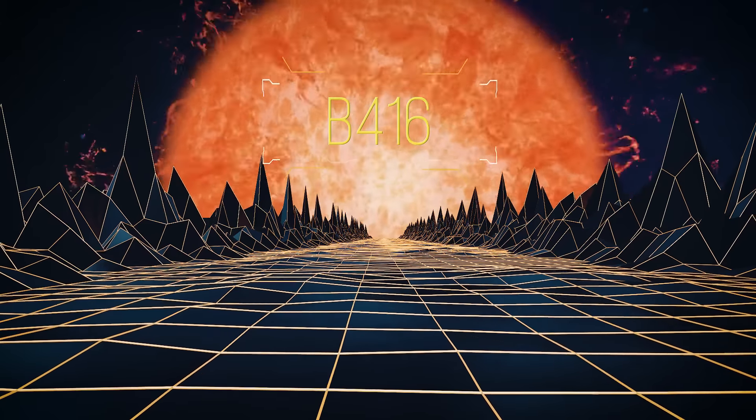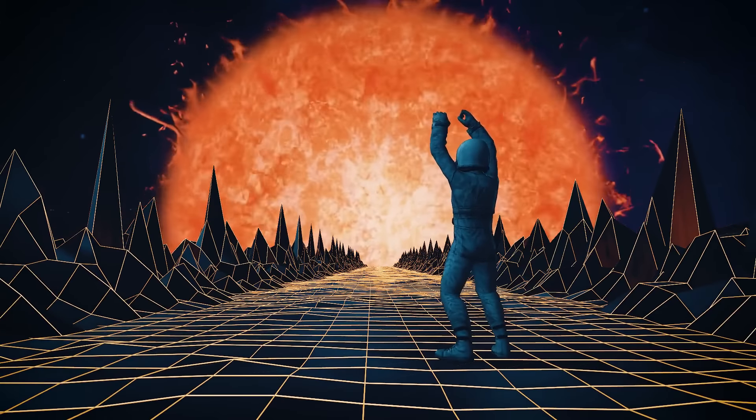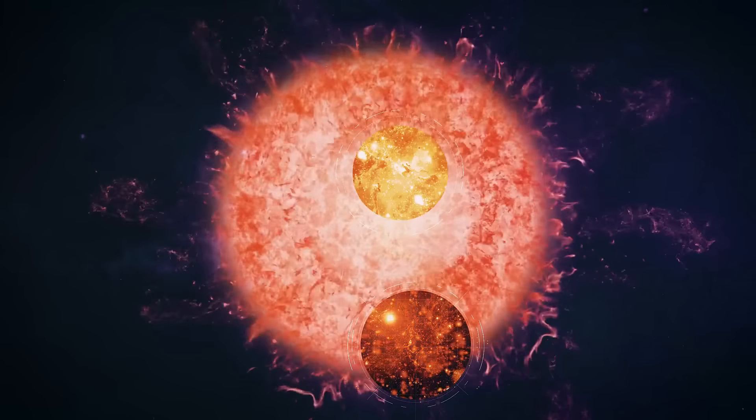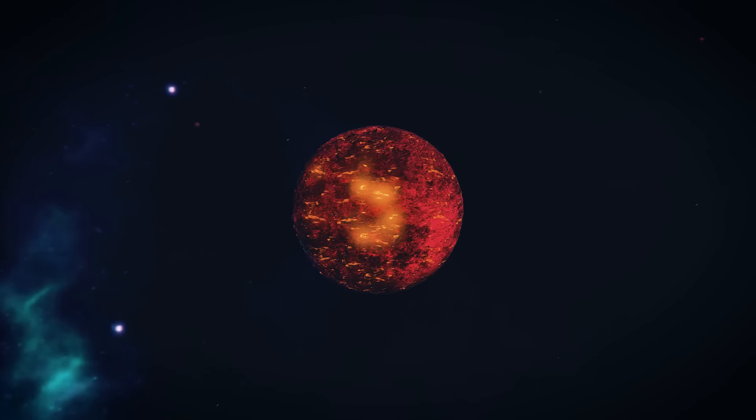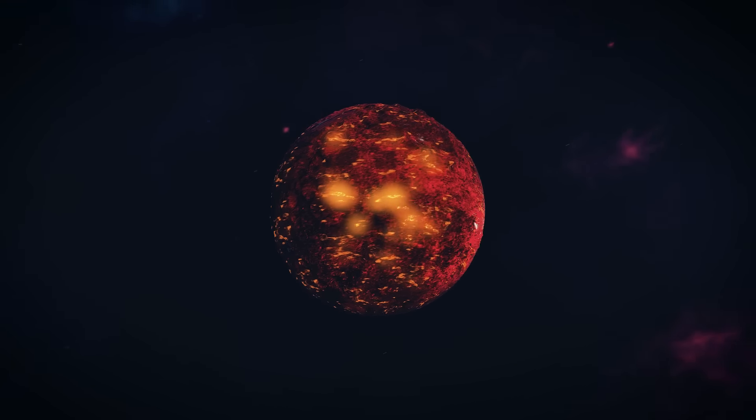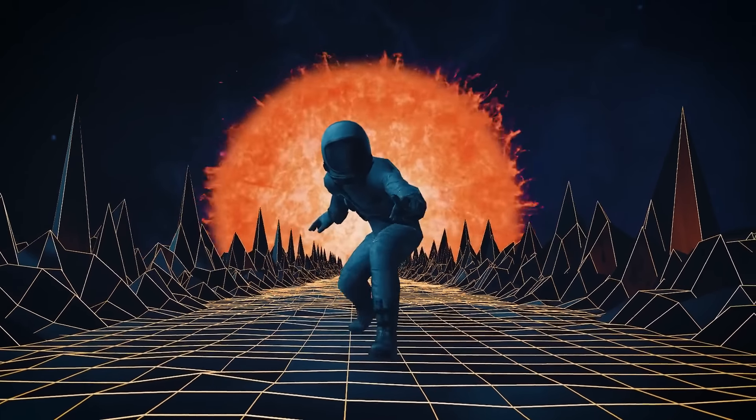That would be a blue supergiant in the constellation Triangulum. Meet BAT99-98. It's almost 10 million times brighter than the Sun. But the brighter a star, the faster it burns up all its fuel, and the shorter its life. Compared with a red dwarf that barely glows and burns fuel much more slowly, its life will be hundreds of thousands of times shorter.